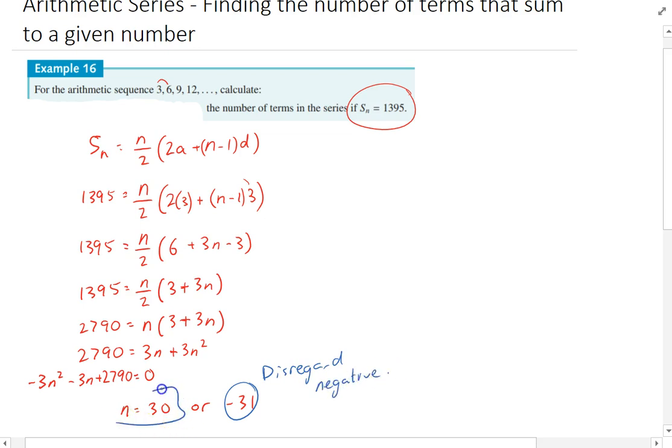So the answer in this case - the number of terms in the series to add up to 1395 - is 30 terms.